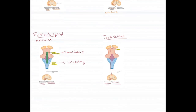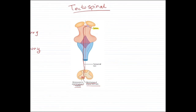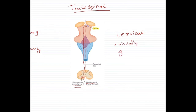Both the pontine reticular formation and the tectospinal tract form the anterior white column of the spinal cord. However, the tectospinal tract does not travel the entire spinal cord — it terminates in the cervical region. Because it only reaches the cervical level, it supplies muscles of the neck and face, and its function is to mediate visually guided head movements.